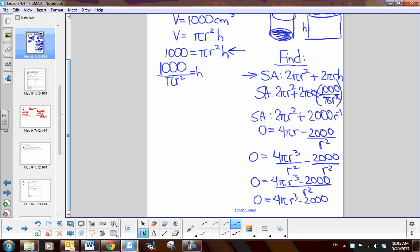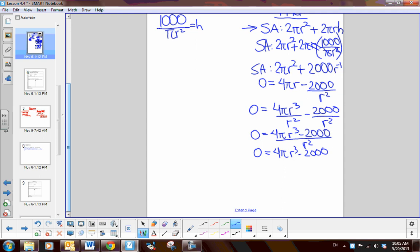So now I'm going to factor, and then use a zero product property. Let's see, 4 pi r cubed, actually I could add 2,000. It's 4 pi r cubed, divide by 4 pi. So, 4 goes into that, what is that, 500 over pi equals r cubed, and then take the third root.